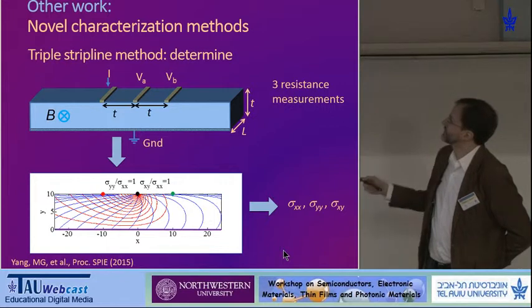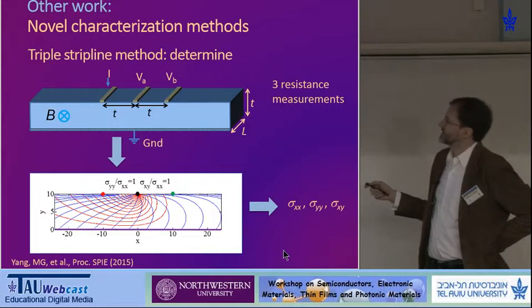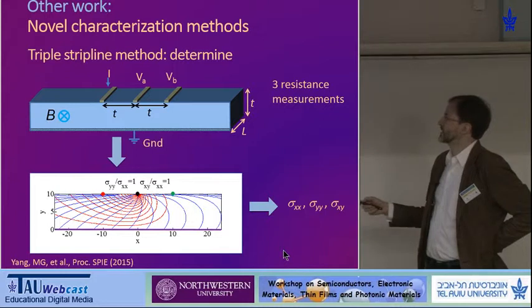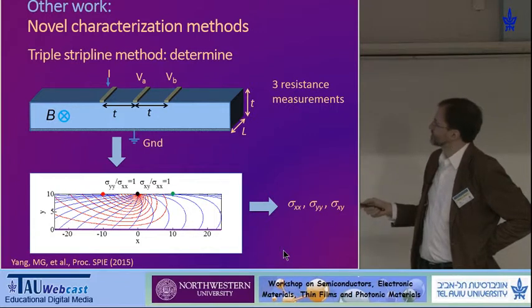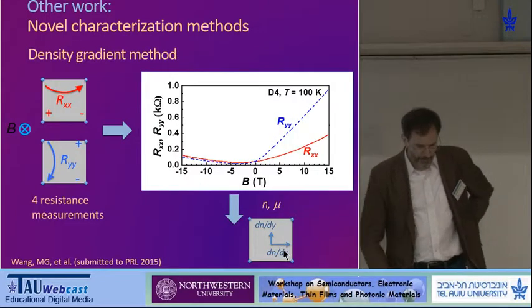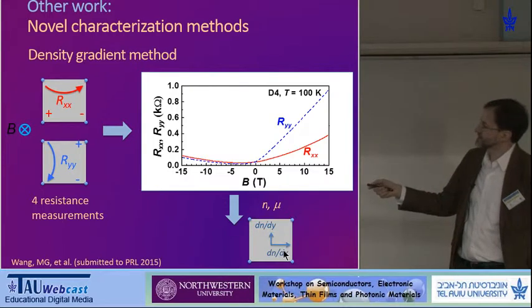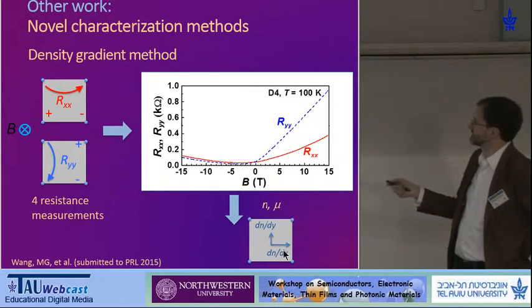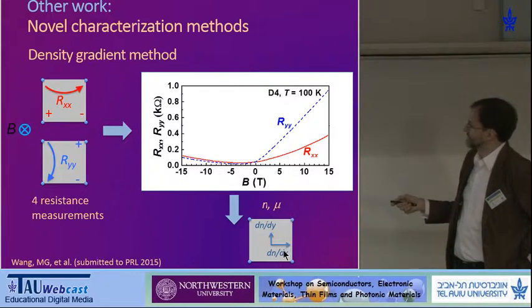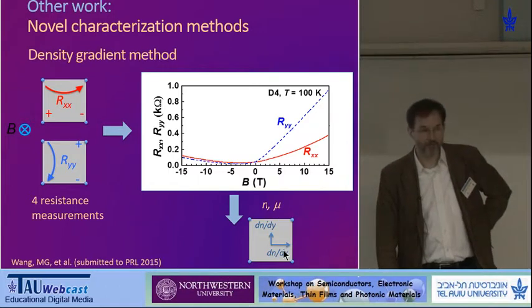To give you an overview, one of the things that we work on is novel characterization methods. For example, we've developed a new method whereby if you have a thin conducting film on top of a grounding plane, you can conduct a series of measurements and deduce the full conductivity tensor with a sequence of three resistance measurements.